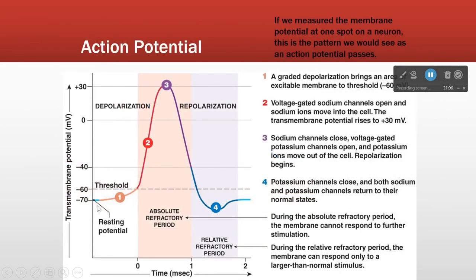If we take our meter and put it across the cell membrane at a particular place, when an action potential passes that place, here is what we see. Here we are at resting membrane potential. When the membrane potential goes up to threshold — in this case we're calling it minus 60 — that's going to trigger the opening of sodium channels. The upstroke is the result of sodium rushing in, carrying positivity into the cell and therefore causing depolarization.